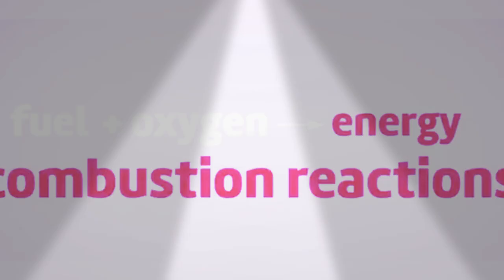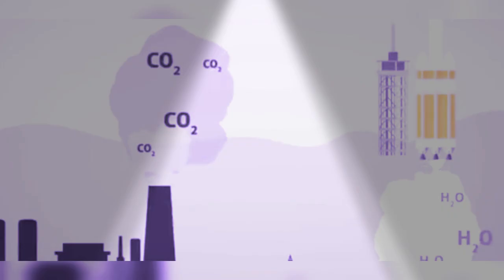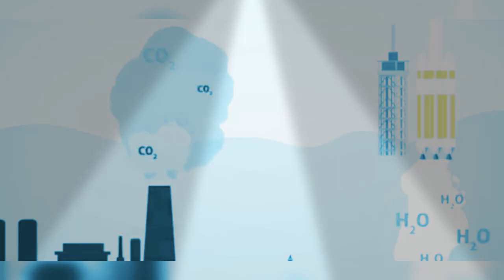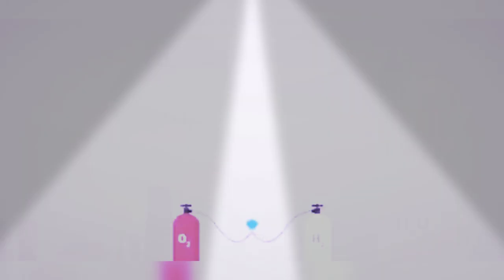In combustion reactions, one product of energy is formed and other products of waste are formed. For example, when we burn coal in oxygen, the products are carbon dioxide and energy. Another reaction is hydrogen and oxygen to give water and energy. In most cases, the burning substance gives gases like carbon dioxide.